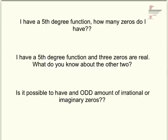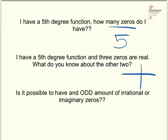A couple of concepts to think about before watching the 5.7 videos: if you have a fifth-degree function, how many zeros do you have? Any degree function has that many zeros, so a fifth-degree function has five zeros. If three of those zeros are real, meaning it crosses the x-axis three times, then the other two have to be imaginary.